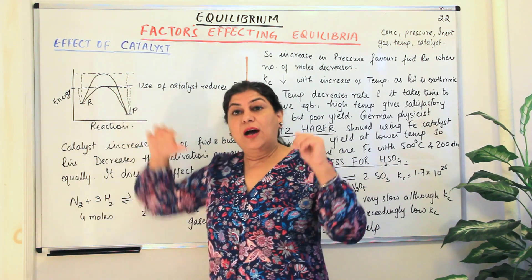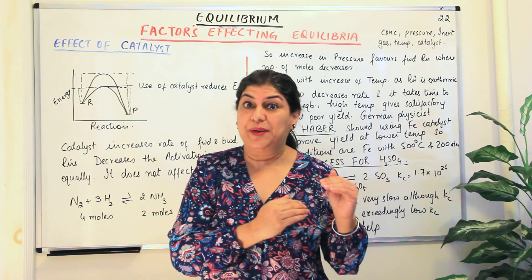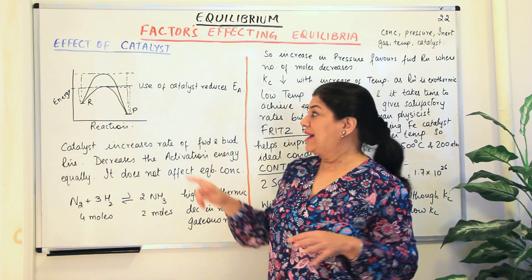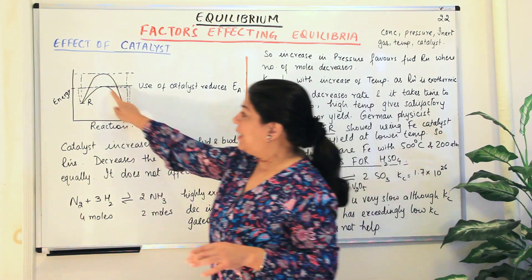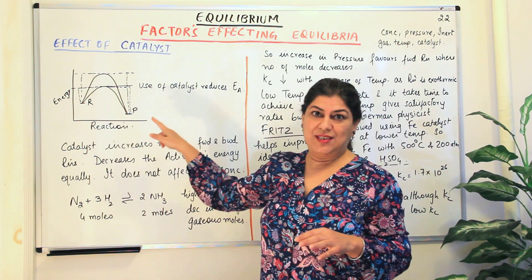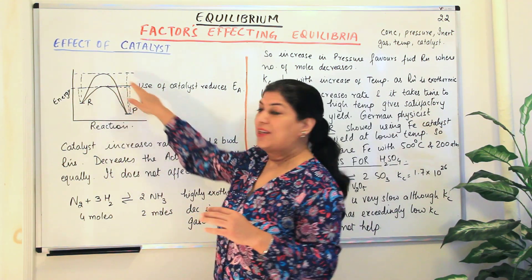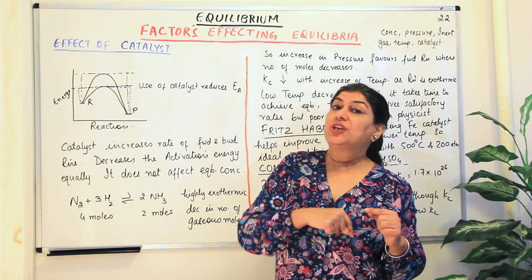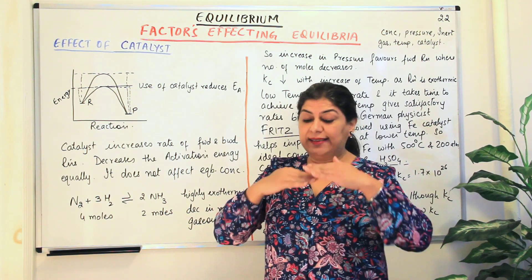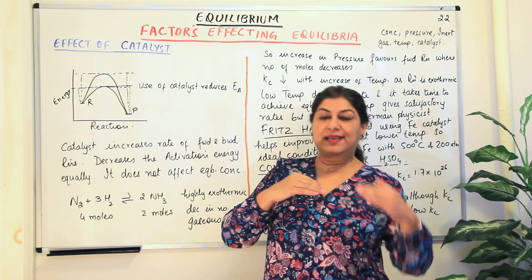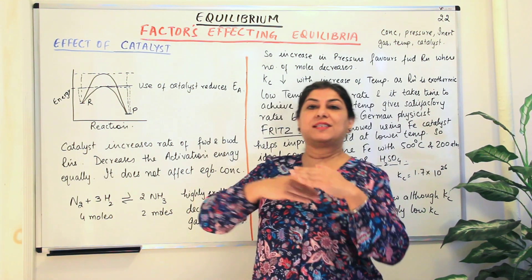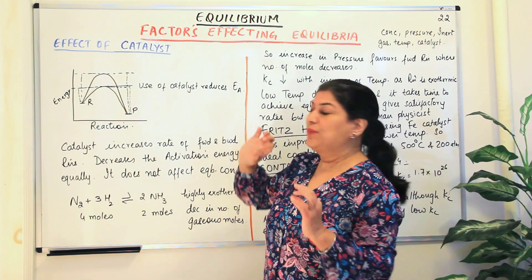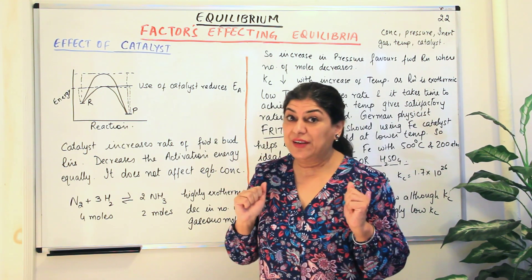Now how do we relate this to equilibrium? We know that equilibrium is established in reactions which take place in both directions — the reactants are turning into products and at the same time the products are also turning into reactants. At the point where the rate of reactants turning into products and products turning into reactants is equal, that is the state known as the state of equilibrium.